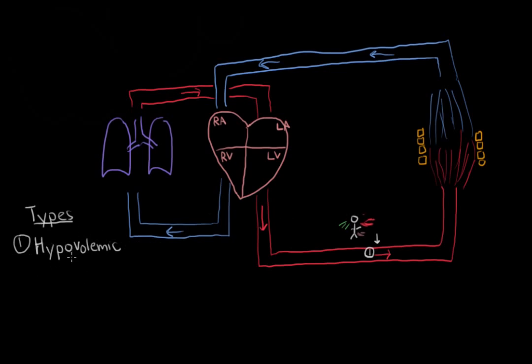So what's something else that can decrease tissue perfusion? What if we decrease the flow through the entire system? Well, what causes the cardiovascular system to function? It's the heart. So if the heart can't contract and push blood forward, that can lead to shock. And so that's known as cardiogenic shock from the heart.